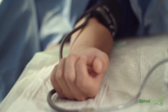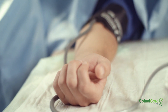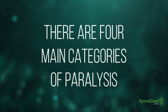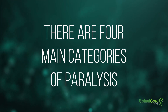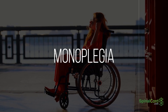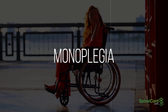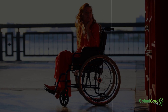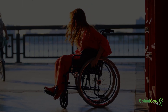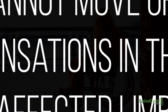There are many types of paralysis because there are innumerable ways the body can be injured. There are four main categories of paralysis, which have to do with the portions of the body affected. Monoplegia is paralysis in a single area of the body, most typically one limb. People with monoplegia typically retain control of the rest of their body but cannot move or feel sensations in the affected limb.